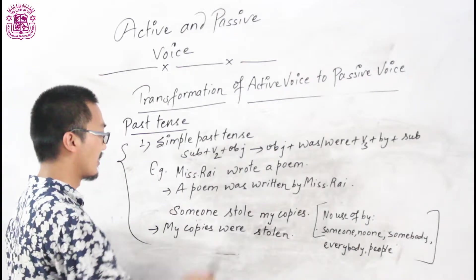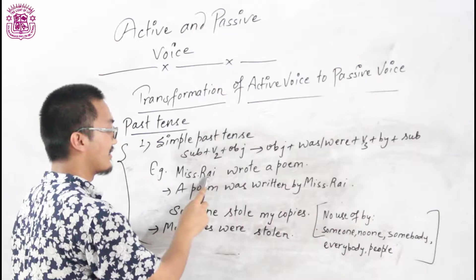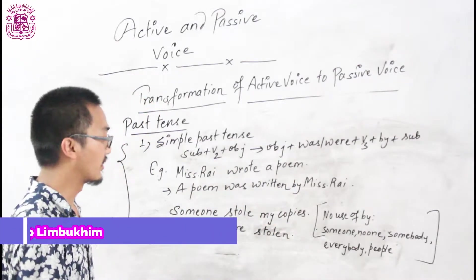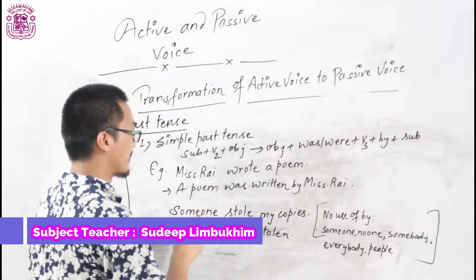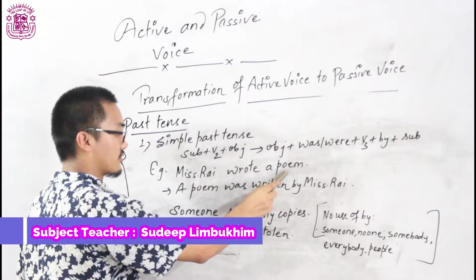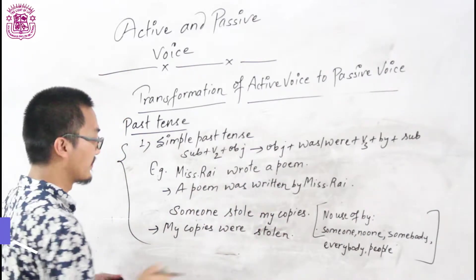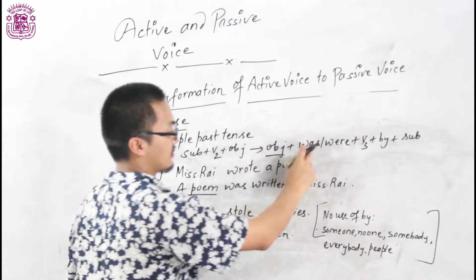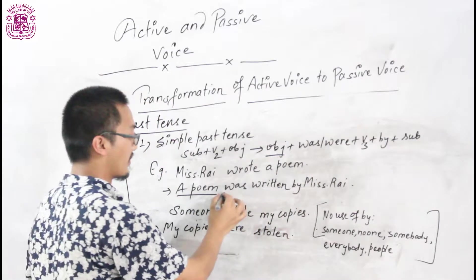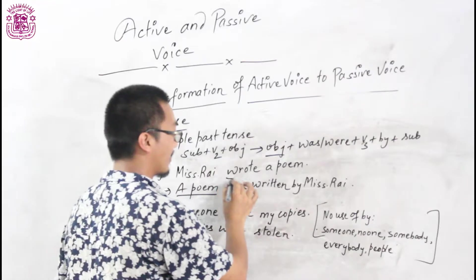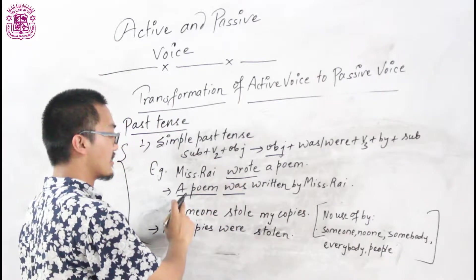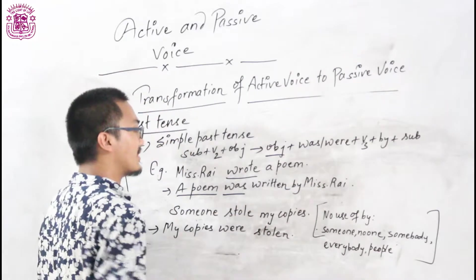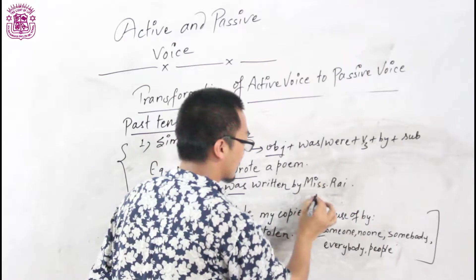Now let's find out some examples. 'Miss Wright wrote a poem.' Here, Miss Wright is used as subject, 'wrote' is V2, and 'a poem' is used as object. So while changing this sentence into passive voice, 'a poem' is object, so we have to make this object into subject. 'A poem' is singular and singular takes 'was', not 'were'. So we write: 'A poem was' — and the V3 of 'wrote' is 'written'. So the answer is: 'A poem was written by Miss Wright.' If a person's name is given, you don't have to change it.